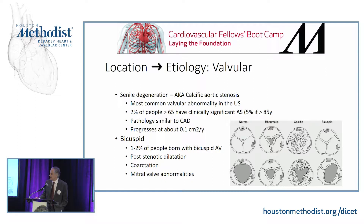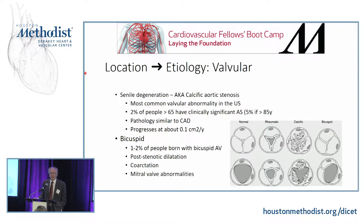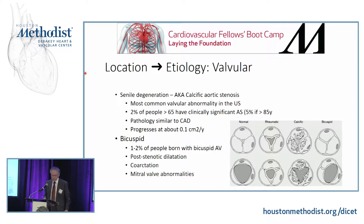Bicuspid disease is probably the most common congenital valvular disease, affecting about 1–2% of the population. It's associated with other congenital abnormalities such as coarctation of the aorta and mitral valve abnormalities. Patients who have stenosis based on a bicuspid valve tend to have a slightly higher incidence of post-stenotic dilatation than patients who have it from other causes.